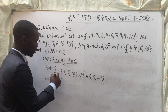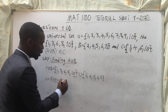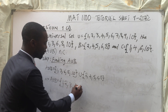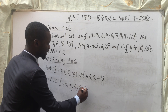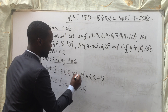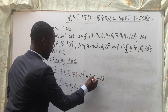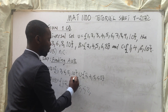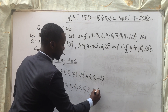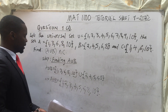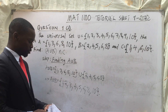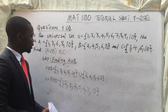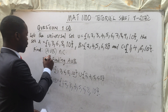So we have got 1, 2, 3, 4, 5, 6, 8 — 8 is repeated and 6 is repeated, but we write them only once — and then we have got 10. So this is A union B: {1, 2, 3, 4, 5, 6, 8, 10}.